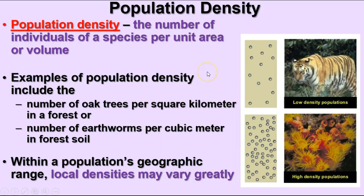When we talk about how members of a population are distributed, we use the term population density — how many individuals within a particular unit area. Maybe per square meter, per square kilometer, or within the confines of your city limits. Examples include oak trees per square kilometer or earthworms in a cubic meter. It could be how many squirrels inhabit the trees in your yard — whatever area you're considering when you talk about population density.